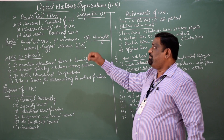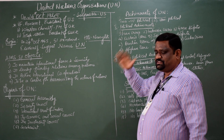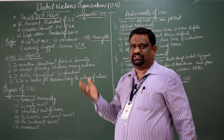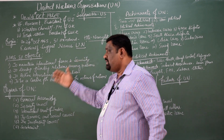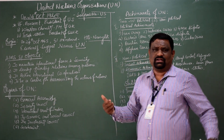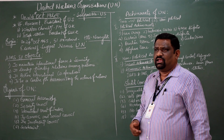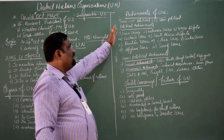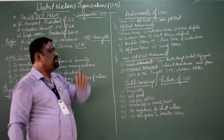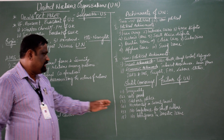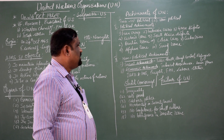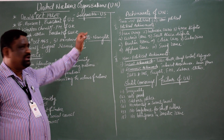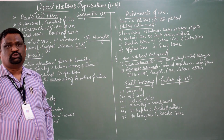These are the brief information about the United Nations — its origin, aims and objectives, official languages, membership, and organization. Now it is time to know about the achievements as well as the failures of the United Nations. I will first discuss the achievements of the UN.